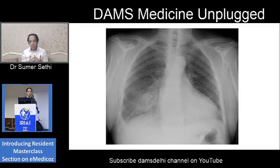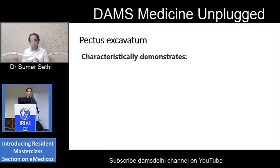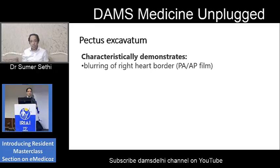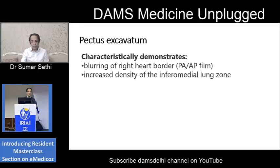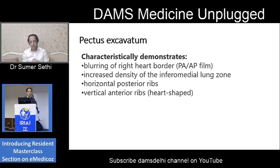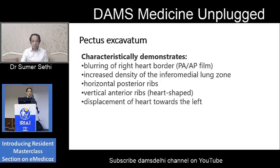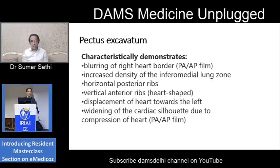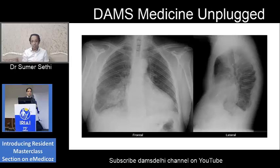It is very important that as a radiology resident you are able to identify this on a chest X-ray PA view. To summarize the findings: the X-ray shows blurring of the right heart border, increased density in the inferomedial lung zone, posterior ribs more horizontally placed and anterior ribs more vertically placed, and displacement of the heart towards the left with widening of the cardiac silhouette — all because the heart is compressed by the deformity.